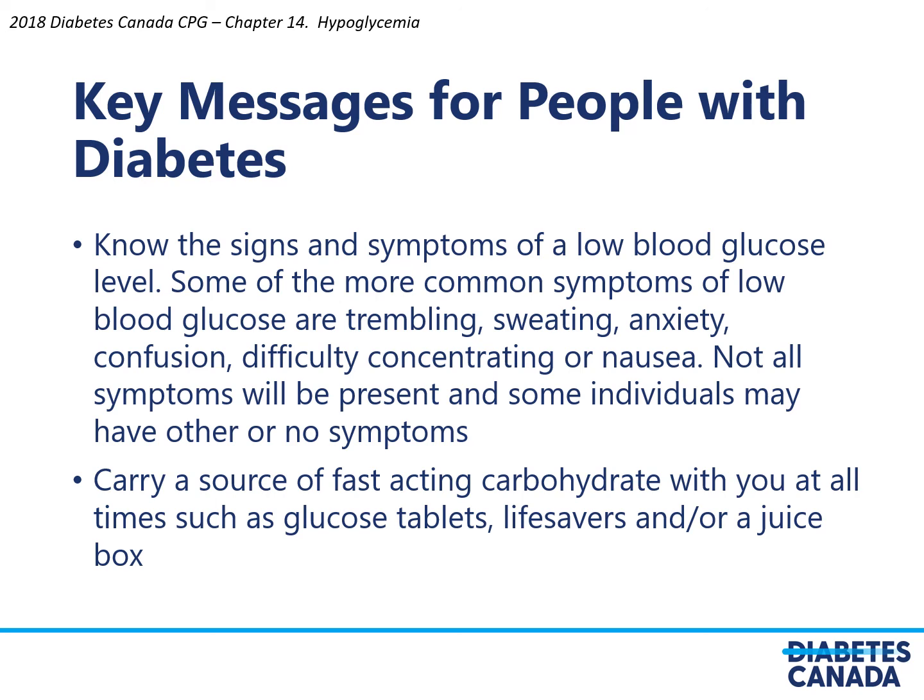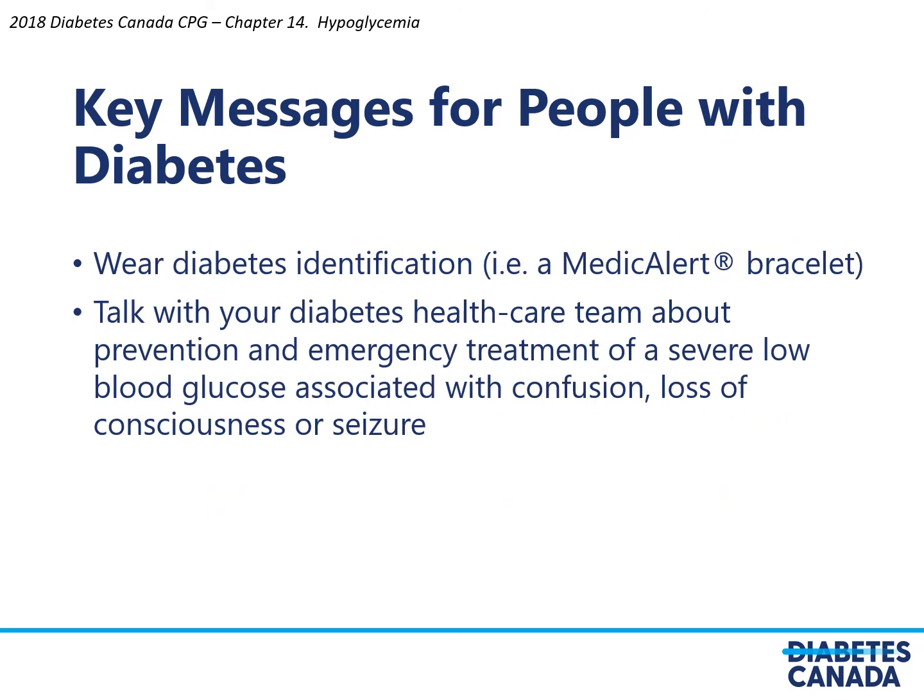Key messages for people living with diabetes: know the signs and symptoms of low blood glucose, including trembling, sweating, anxiety, confusion, difficulty concentrating, or nausea. Not all symptoms will be present and some individuals may have other symptoms. Carry a source of fast-acting carbohydrate at all times such as glucose tablets, lifesavers, or a juice box. Wear diabetes identification such as a medical alert bracelet. Talk with your diabetes healthcare team about prevention and emergency treatment of severe low blood glucose associated with confusion, loss of consciousness, or seizure.